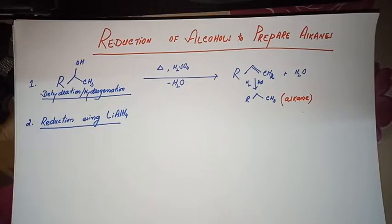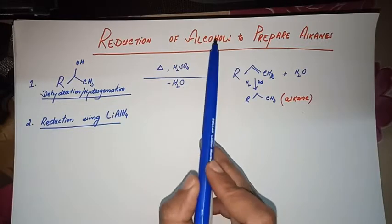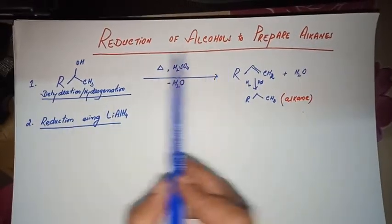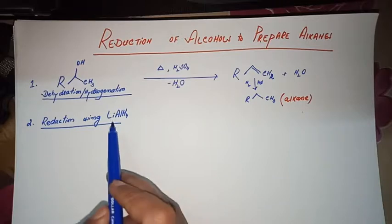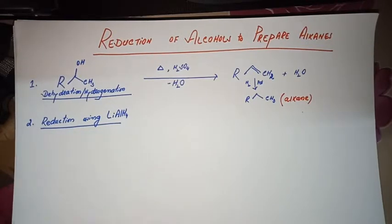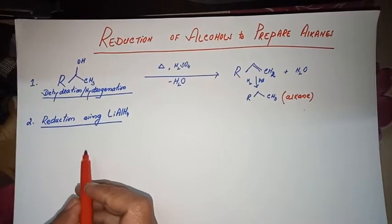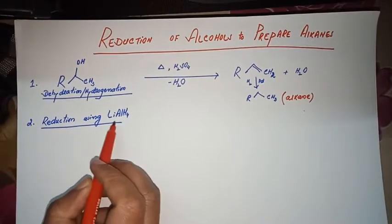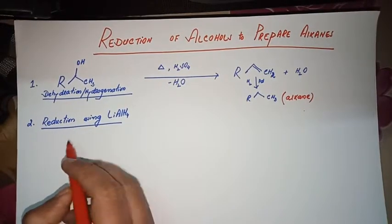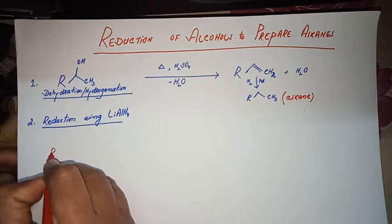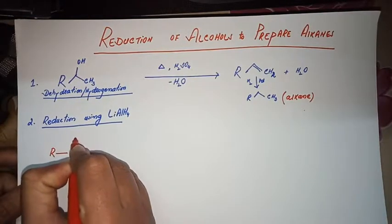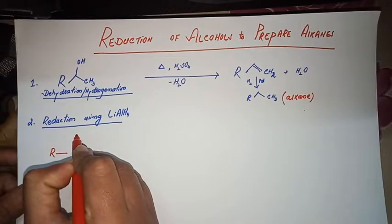Similarly, another reaction for converting your alcohol into alkanes, or preparing alkanes from alcohol, is reduction using lithium aluminium hydride. So it is another, also a bit complicated reaction and not very commonly used for preparation of alkanes. However, we shall see how to reduce alcohol using lithium aluminium hydride. Let's suppose we do have an alcohol.